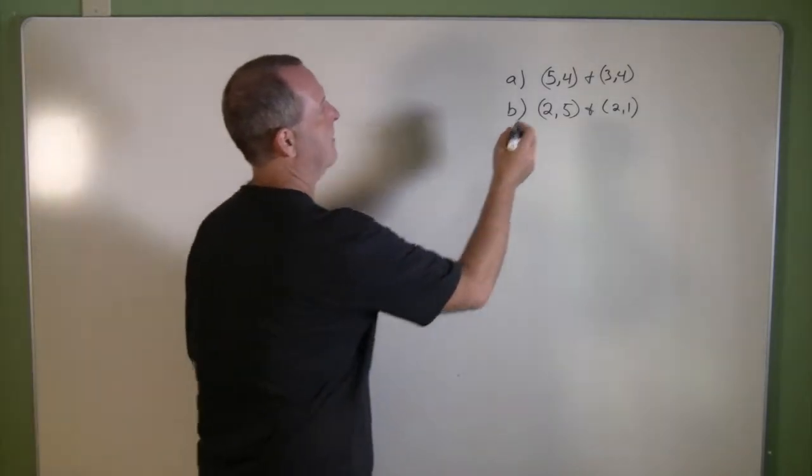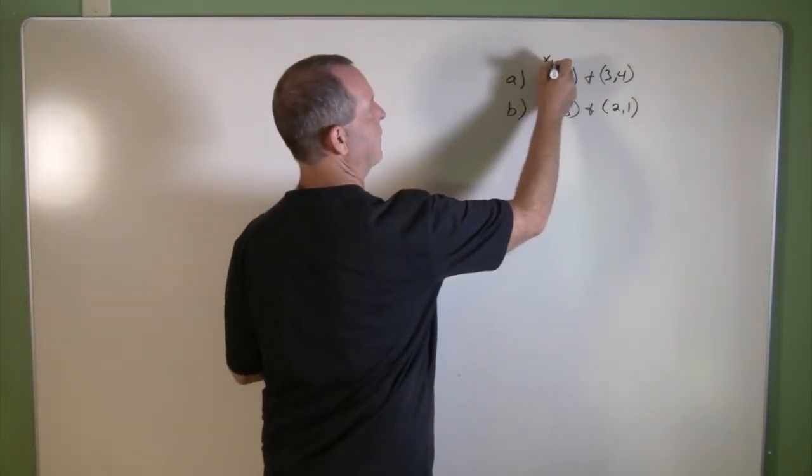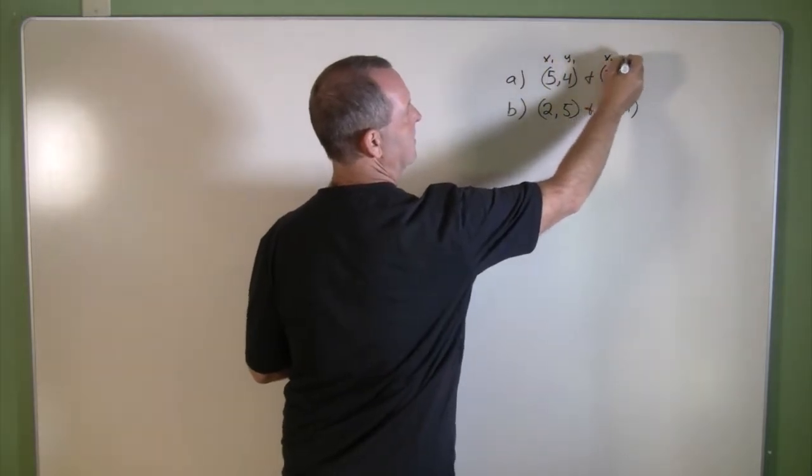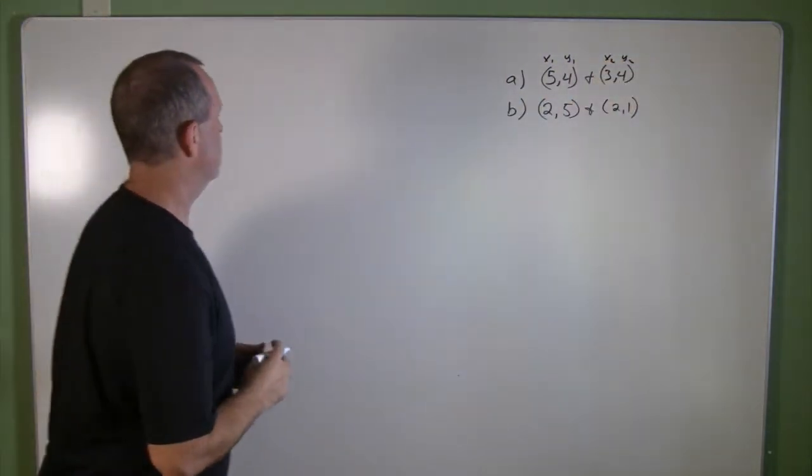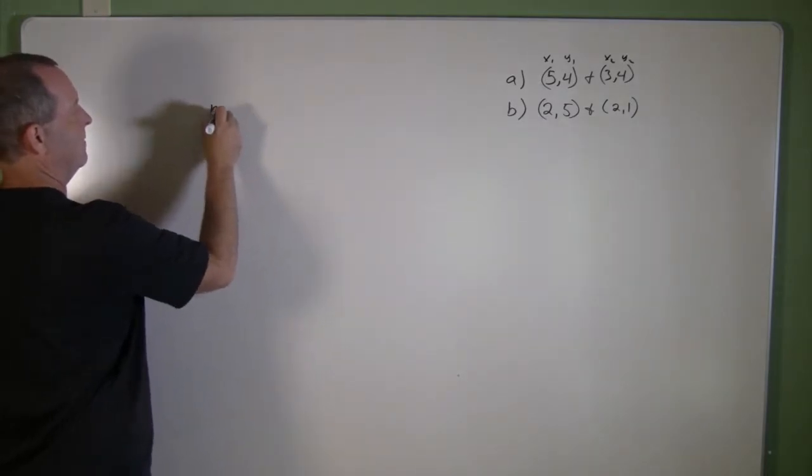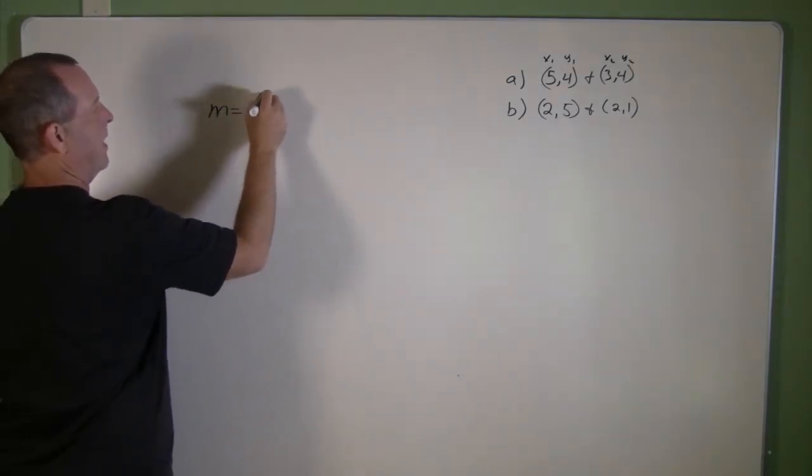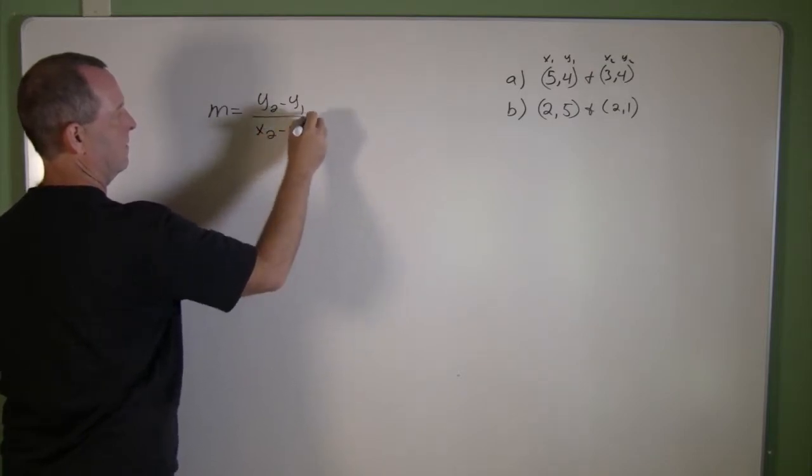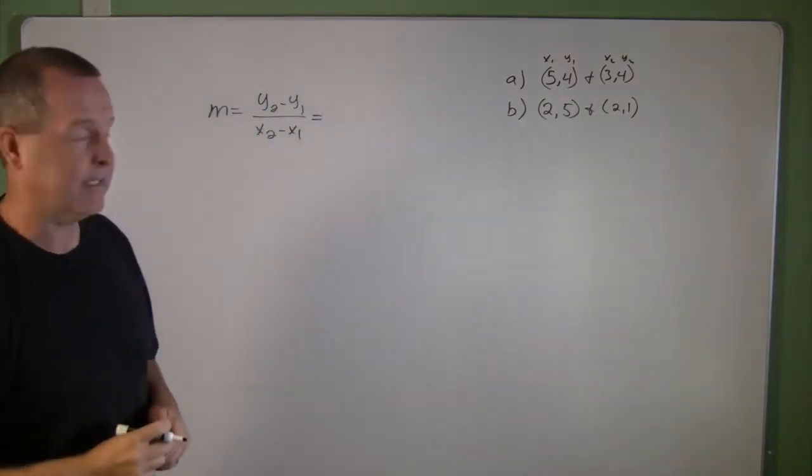Example A, let's set this first one as my first coordinates and this one my second set of coordinates. So my slope on that first one equals the change of my y's over the change of my x's.